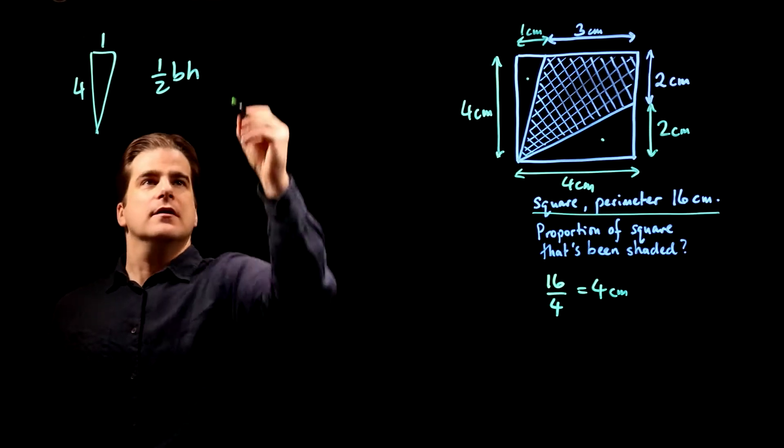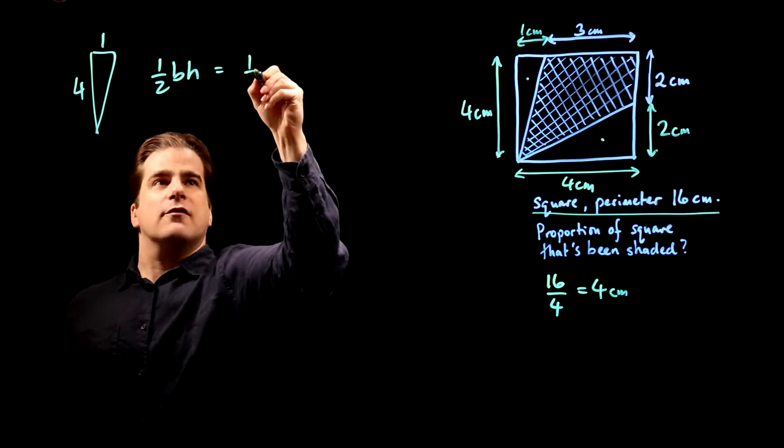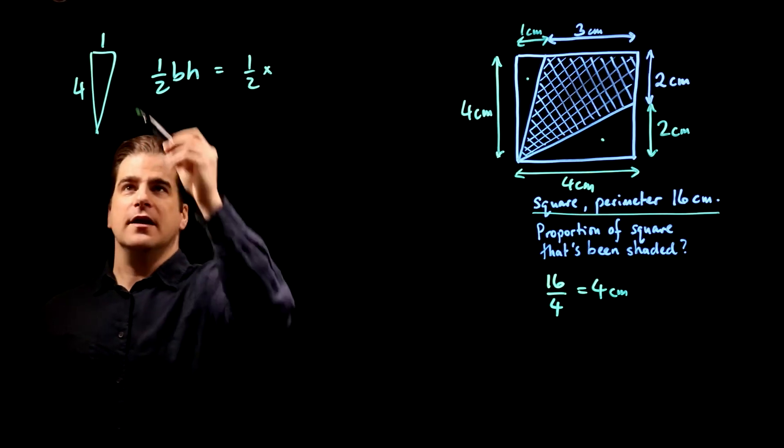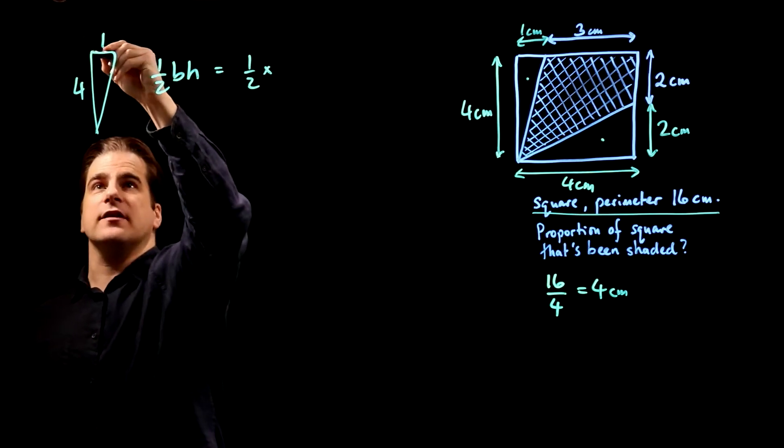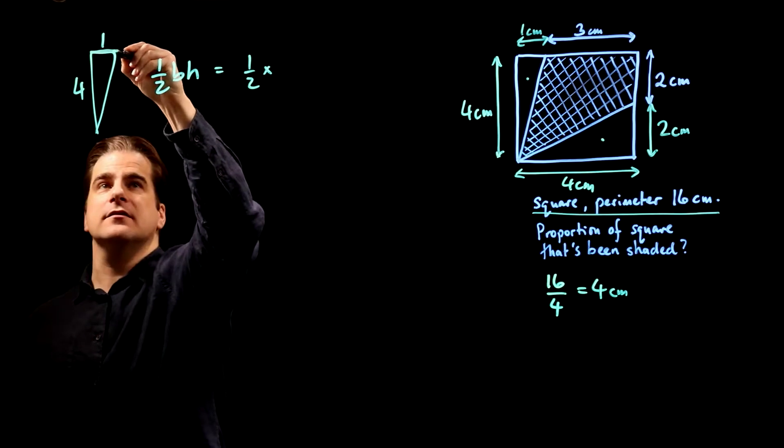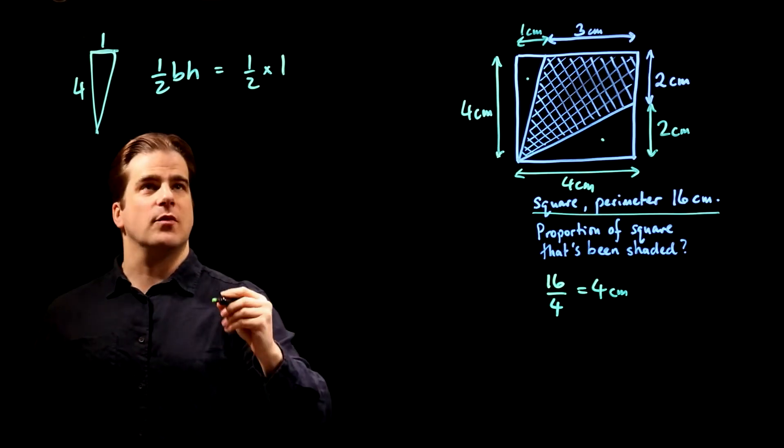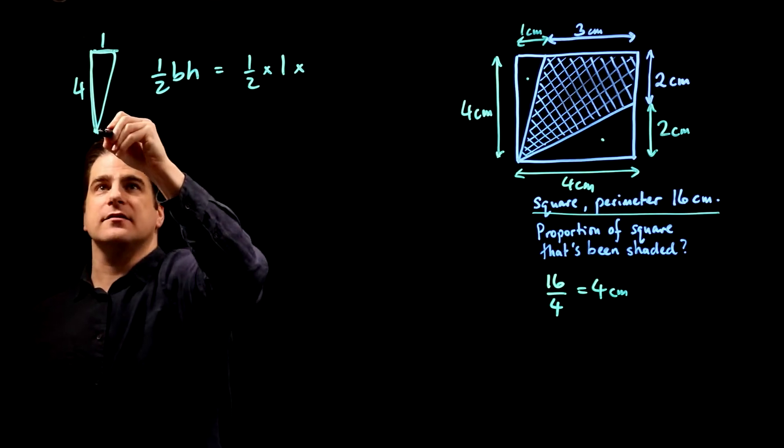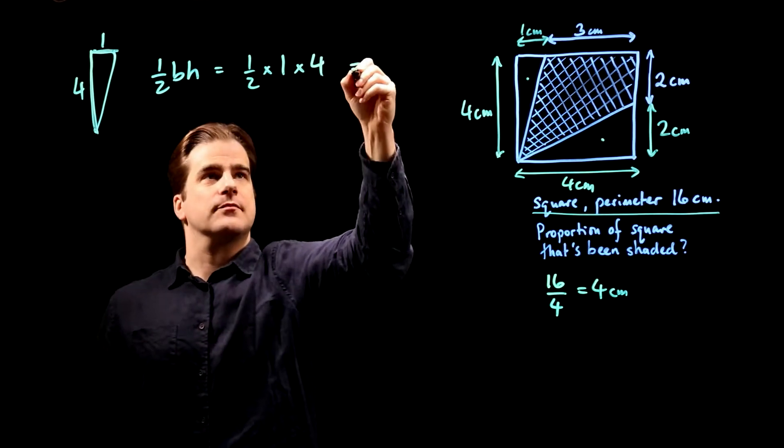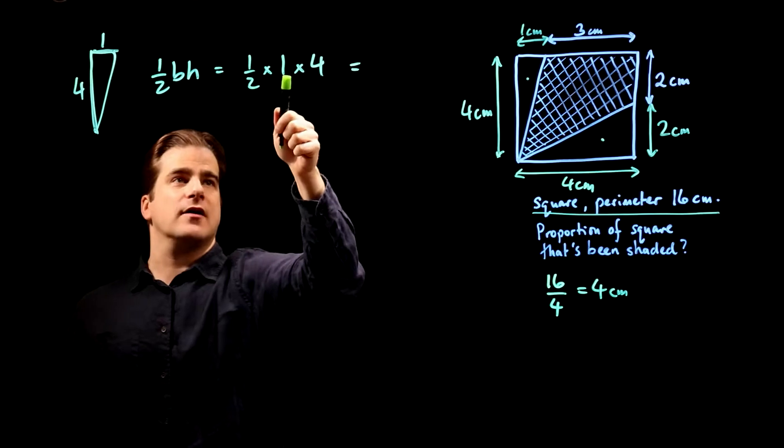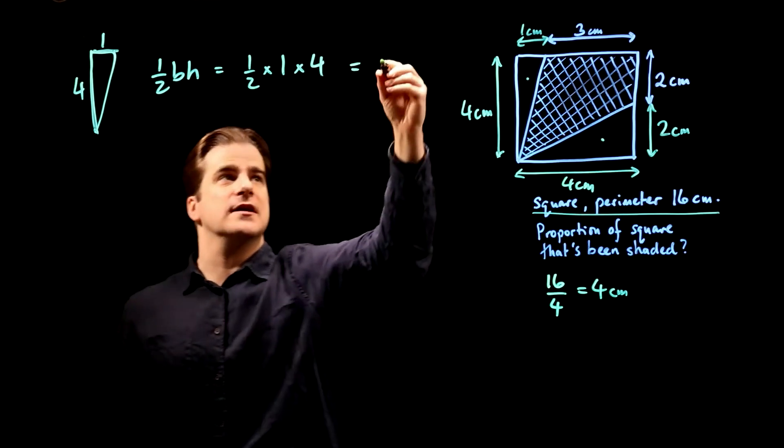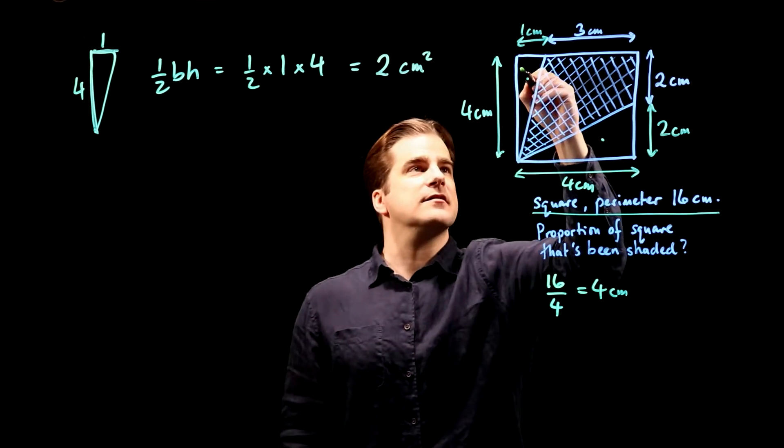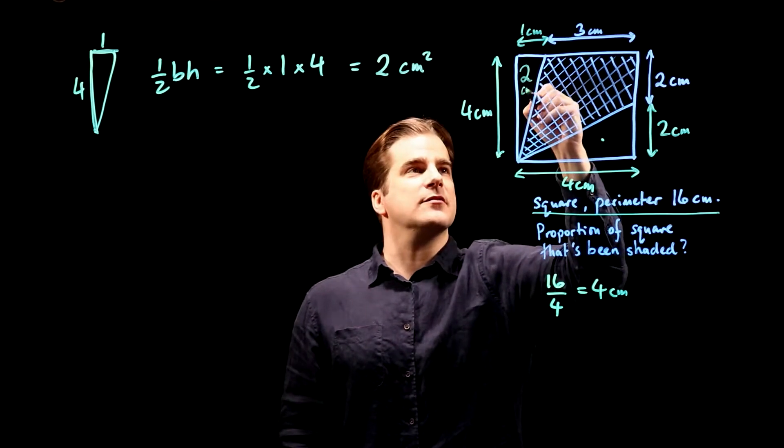So, half times, what's the base? Well, it's upside down, but that doesn't matter. We can just treat that as the base, times one. What's the height? Well, if that's the base, then that's the height, so the height must be four. So, half times one is a half, times four is two centimetres squared. So, that's two cm squared.